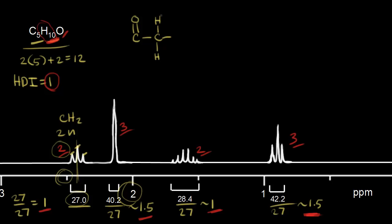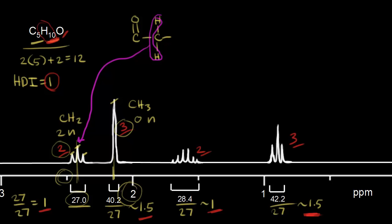The carbonyl oxygen deshields these two protons, giving a higher chemical shift compared to an alkane-type region. Let's color these protons magenta — this signal is due to those two protons. Moving to the next signal: three protons means a methyl group, CH3. There's only one peak, so one minus one equals zero neighboring protons. The chemical shift is again past 2 ppm, so these protons are deshielded and must be next to the carbonyl.